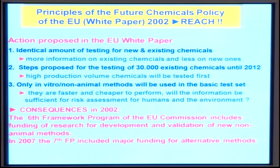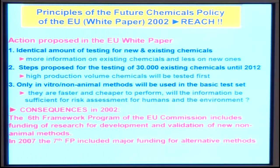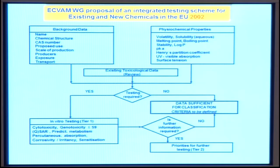In 2002 — before Thomas joined ECVAM — we had a so-called white paper, the first draft of the EU chemicals directive, today called REACH. At that time, we only tested new chemicals in Europe, but then it was decided we also wanted to test existing chemicals — about 30,000 of them, most without any data. We would have had to use enormous numbers of animals within a 10-year timeframe, so we said we must make better use of in vitro methods. We therefore suggested to the European Commission to fund development and validation of alternative methods in the Sixth and Seventh Framework Programmes.